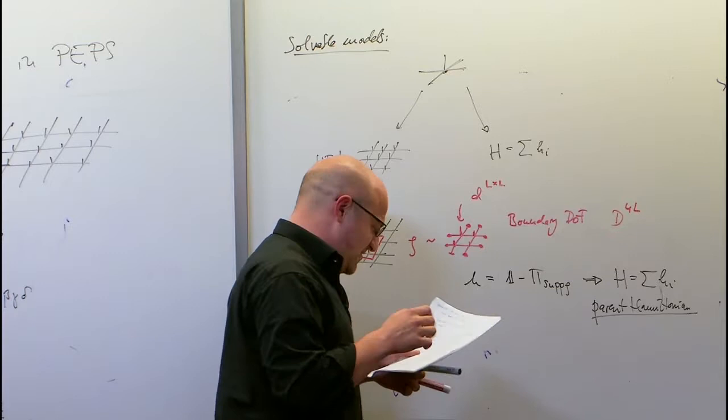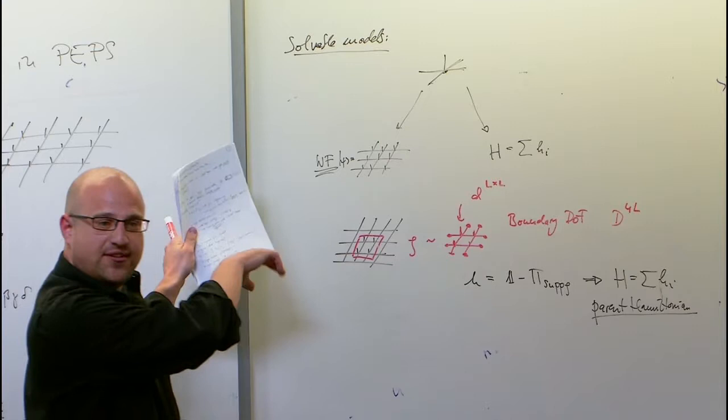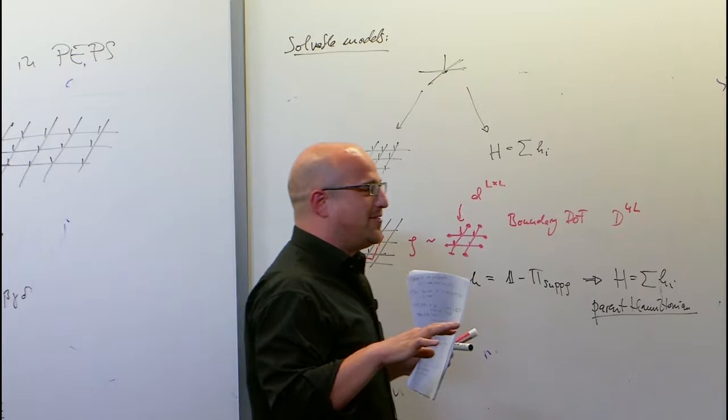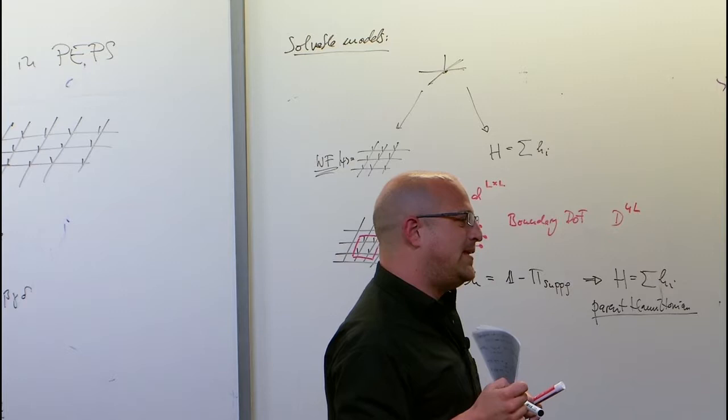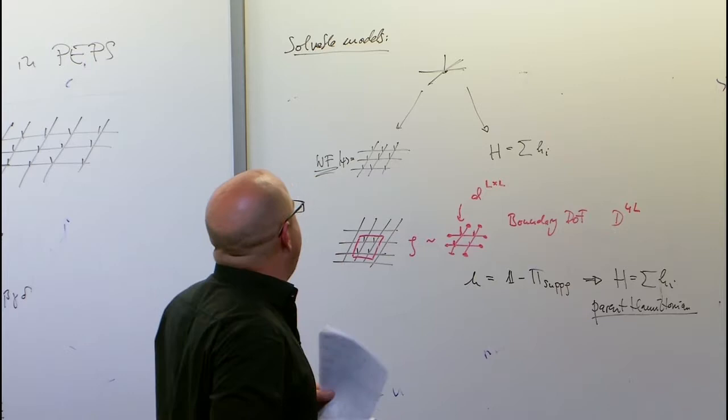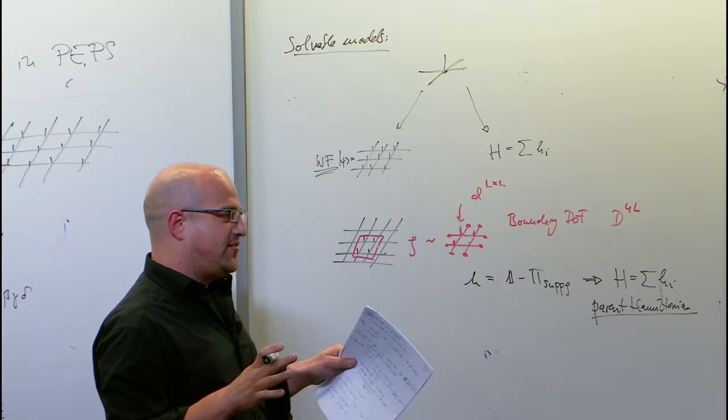Let me first introduce what topologically ordered states are. Are there questions about the general tensor network language? I assumed familiarity given it's a tensor network conference, though there are some non-tensor-network people here. Is it possible to construct the Hamiltonian without constructing the ground states? In some sense, yes — I just look at a small patch of tensors with arbitrary boundary conditions, without constructing the global state.